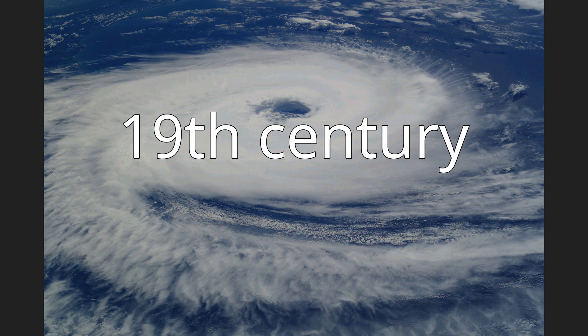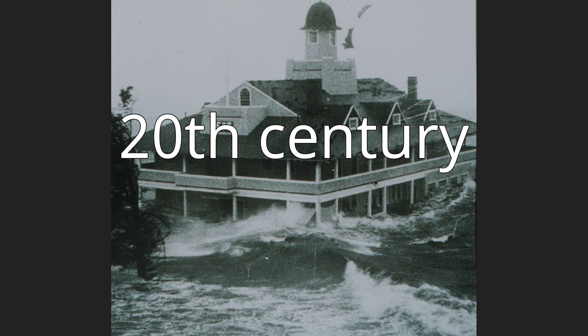19th century: The 19th century saw a few notable storms. In 1869, an intense Category 3 hurricane struck southeastern New England. Other hurricanes that made landfall include the equinoctial storm, Expedition Hurricane, and the Saxby Gale. Since hurricanes were not named and fewer records were kept at the time, information on some storms remains incomplete. 20th century: The 20th century saw eight hurricanes making landfall in New England. The most notable include the 1938 New England hurricane, also called the Long Island Express, which made landfall as a major hurricane. Hurricane Carol did the same 16 years later. The last hurricane to make landfall in New England was Hurricane Bob in 1991 as a Category 2 hurricane with maximum sustained winds of 100 mph.